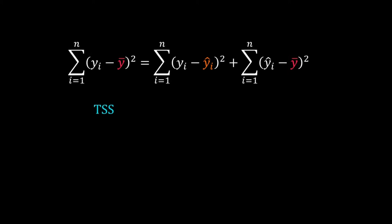The left hand side term is the TSS total sum of squares. The first term on the right hand side is called the RSS residual sum of squares. Sometimes it is also called sum of squared estimate of errors SSE. The last term is ESS explained sum of squares. This is also known as sum of squares due to regression SSR.